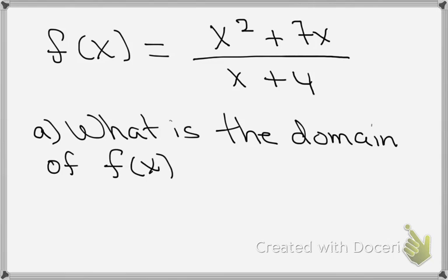When finding the domain, we're looking for two things we're trying to avoid. One is that we want to make sure we don't choose any x values that will cause division by zero, and the other is that we never want to choose any x values that might cause us to take the even root of a negative number. Looking at this function f(x), we see we don't have any roots at all, so we don't have to worry about that.